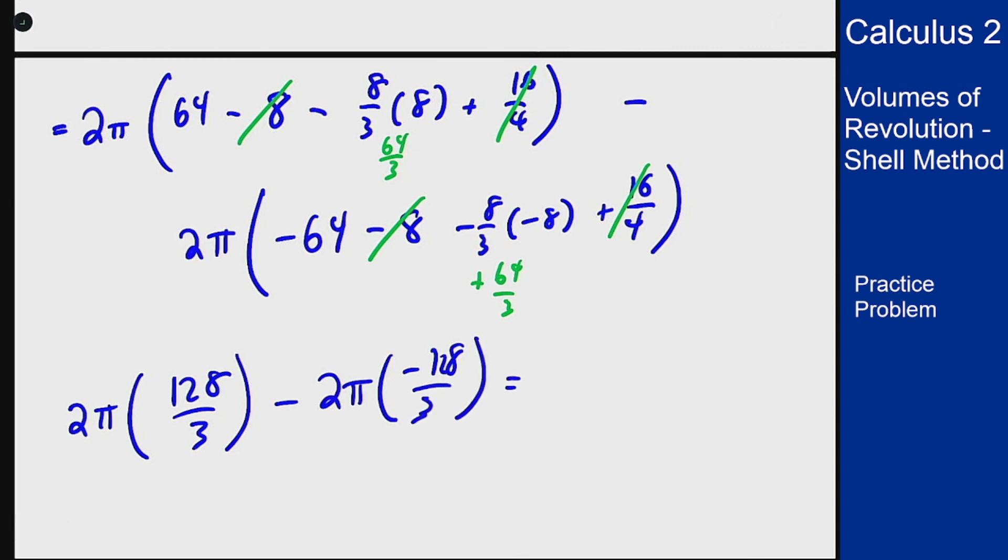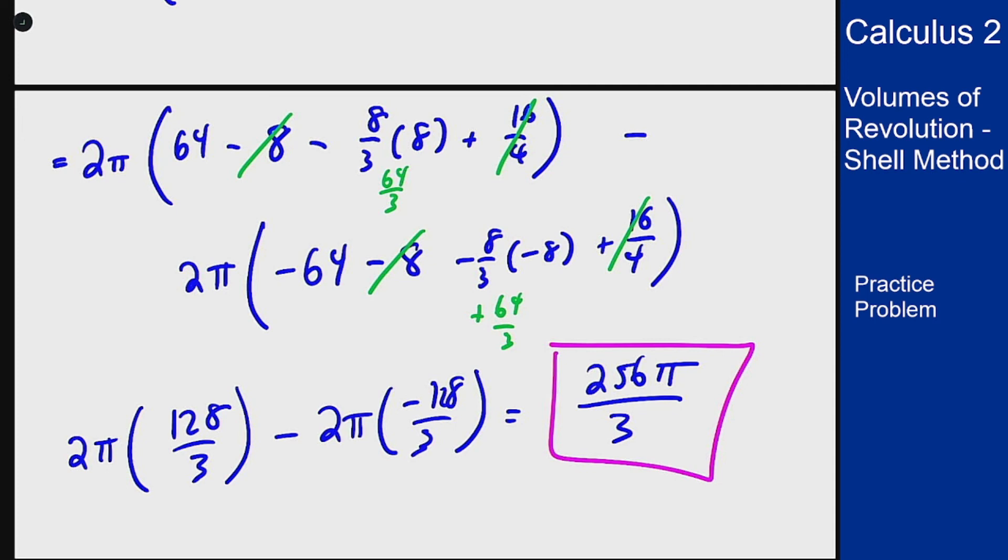And then minus a 2 pi times a negative 128 over 3, resulting in 256 pi over 3 as my volume. That's how you would work out and solve for the volume of this solid revolution using the shell method.